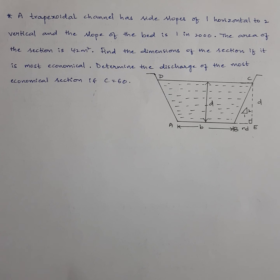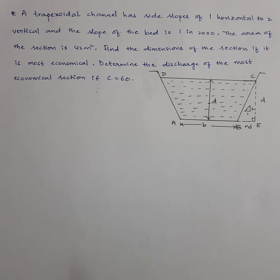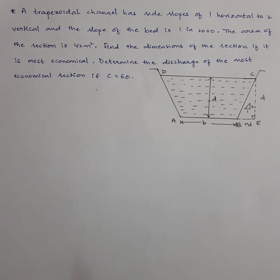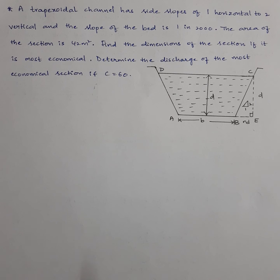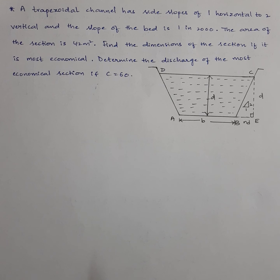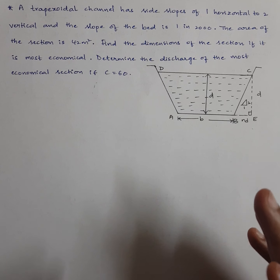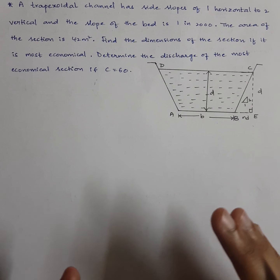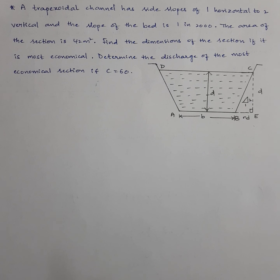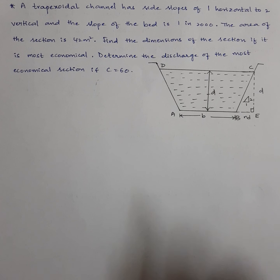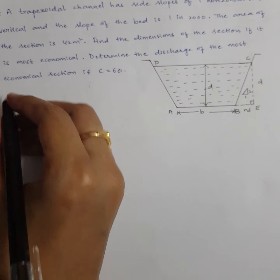Now let's see the next model problem related to trapezoidal channel. A trapezoidal channel has side slope of 1 horizontal to 2 vertical, bed slope of 1 in 2000, and area of 42 m². Find the dimensions of the most economical section and determine the discharge if C equals 60. This requires calculating B, D, and Q.